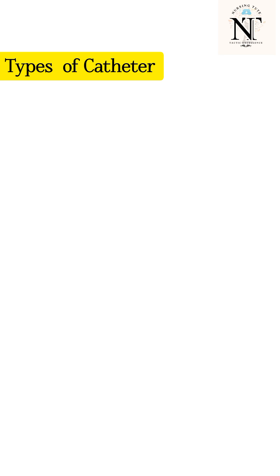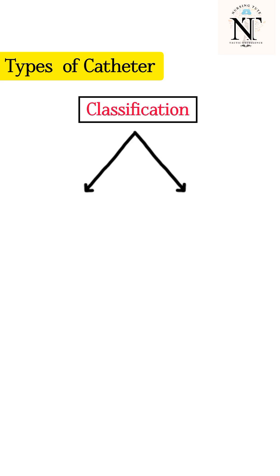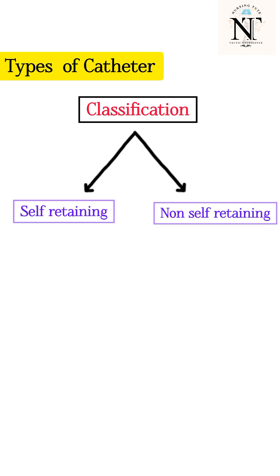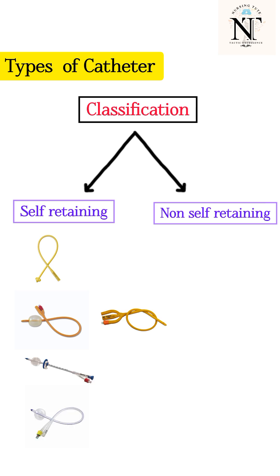Regarding the types of catheter, they are broadly divided into two classifications: self-retaining and non-self-retaining. Self-retaining catheters include the Malecot catheter, two-way or three-way Foley's catheter, suprapubic catheter, and silicone catheter. Non-self-retaining catheters include the Robinson red rubber catheter.